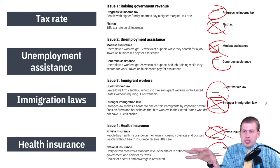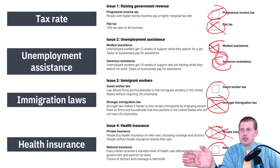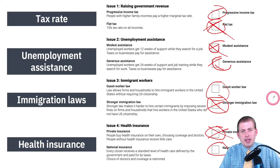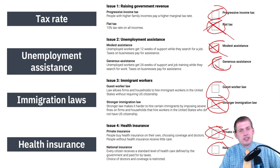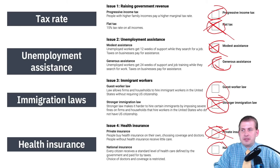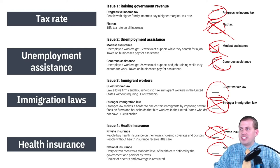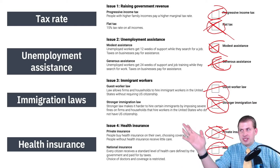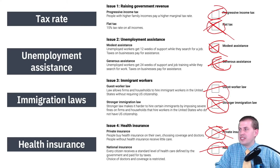When I did this at GSU in fall 2019, it followed similarly — people voted for the flat tax, stronger immigration laws, and private insurance. A friend of mine who teaches university in Finland did the same simulation with Finnish students. Even though they all had roles like CEOs and rich people trying to maximize utility, most of them voted for progressive income tax, generous assistance, the guest worker law, and national insurance — in part because that's what Finland already has. So even fake rich CEOs voted for policies already in place, showing how culture influences this.